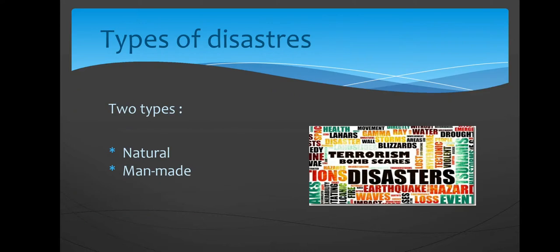Some types of disasters are there. Disasters are of two types: one is Natural Disaster, and the second one is Man-made Disaster.